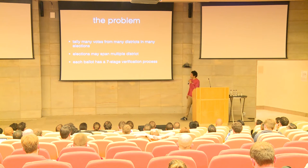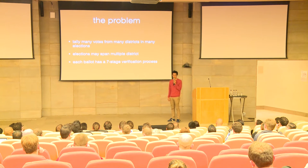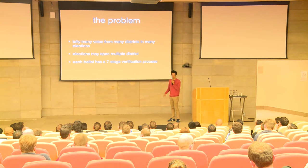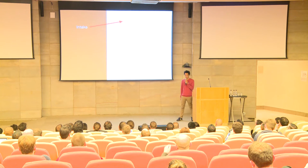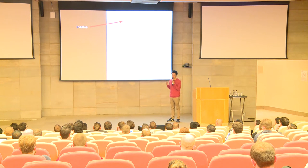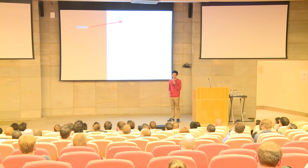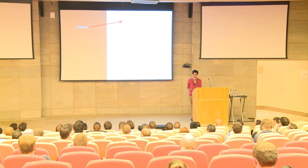Each ballot in the system goes through a seven-stage verification process, and our main responsibility was building this process. It starts with intake — that's when somebody opens a box, opens a bag, takes out a piece of paper, looks at the numbers on it, and enters it into the system. Now we know we have it somewhere and we can start recording the information in it.